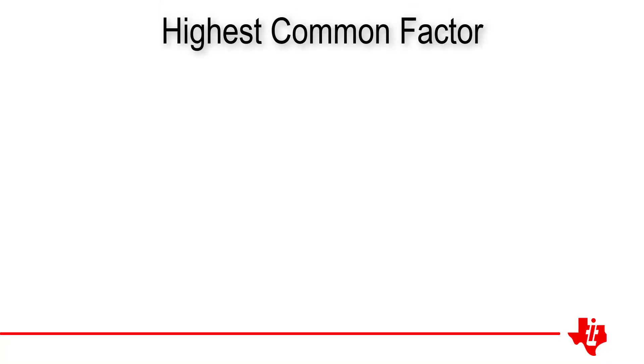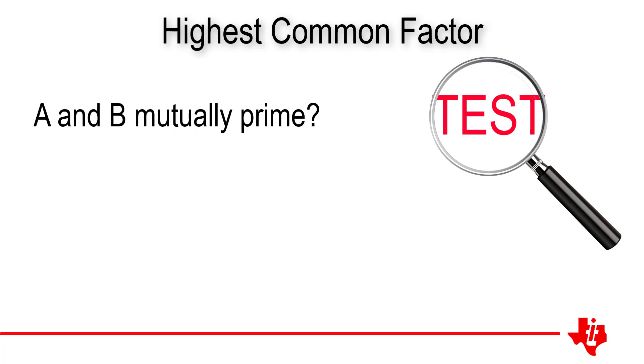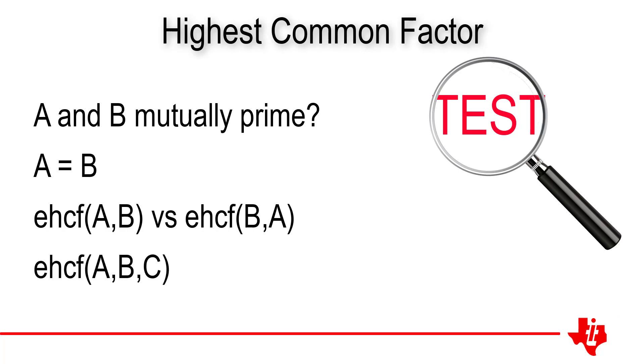An important part of any coding is to test it. Does our program work if a and b are mutually prime? What if a and b are the same? Does it matter if I enter the smaller number first? Once the program has been tested, try extending it to include the highest common factor of three numbers or even a list of numbers.